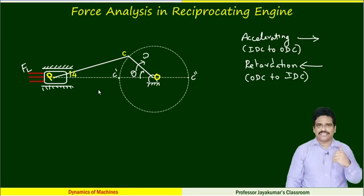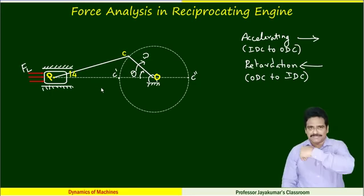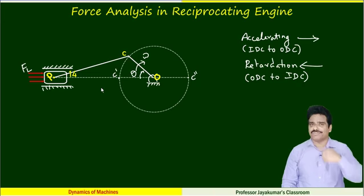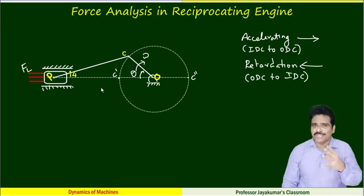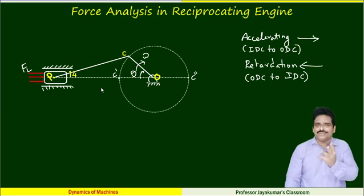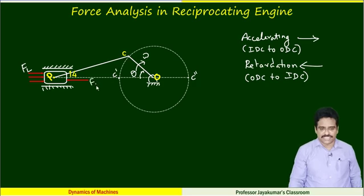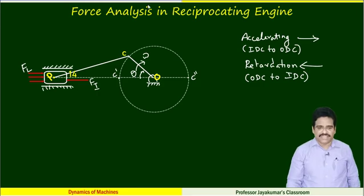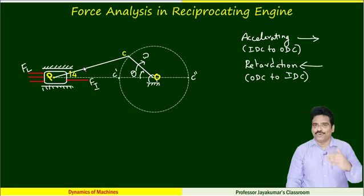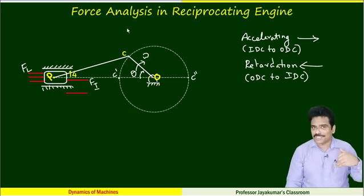When the piston accelerates, we have inertia force equal to M × A, acting in the opposite direction to that of the acceleration — we call it inertia force FI. Additionally, frictional force acts in the opposite direction to piston motion.